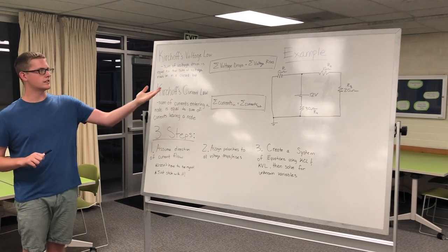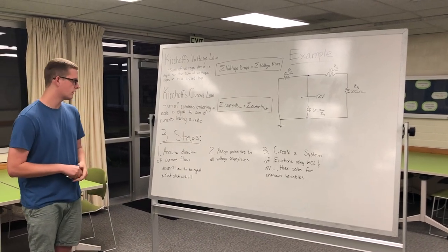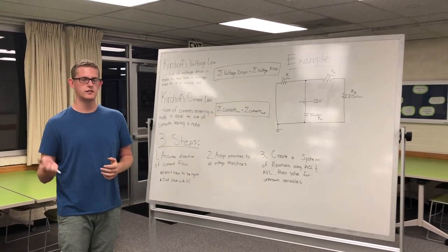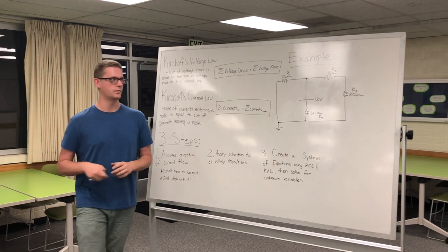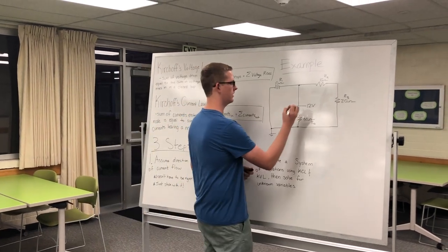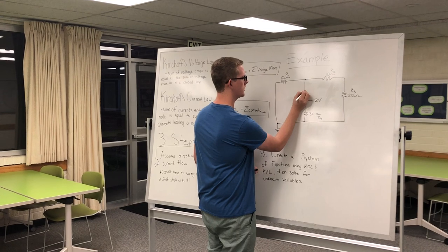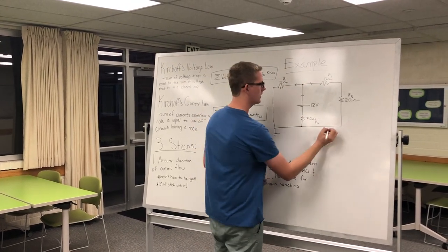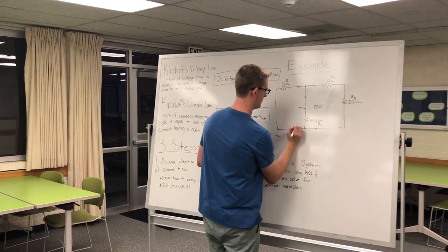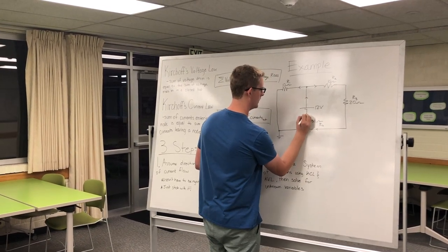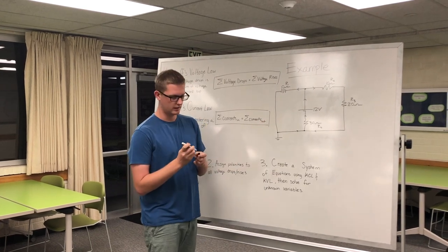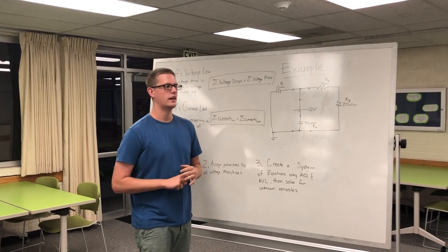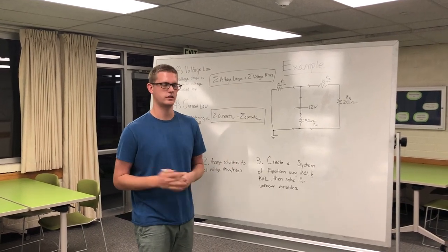Now let's see how we can apply them to this complex circuit. Step one is to assume the direction of the current flow. This doesn't have to be right — you just have to stick with it throughout the rest of the example. Starting at the voltage source, we draw current flow going here, leading through both directions of this node, and then coming back to the original voltage source. That choice is arbitrary and can be any direction, as long as you stick with it throughout the rest of the process.